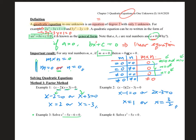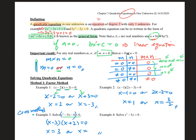Now let's start with example 3. If it is in general form, how can you solve it? You can recall the cross method — it helps you factorize the quadratic expression so it can be written as two linear products. For example, x² minus 5x minus 6 equals 0 can be written as (x minus 3)(x plus 2) equals 0. So you can solve it: x is 3 or x is minus 2.